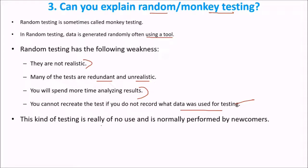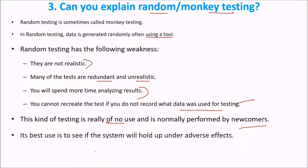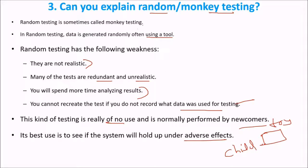This kind of testing is generally performed by beginners or newcomers, and its best use is to see if the system will hold up against any adverse effect. For example, if you give an electronic toy to a child, he is going to do random testing — he doesn't know what it does and will try anything to understand what is going on. This is an example of random testing.